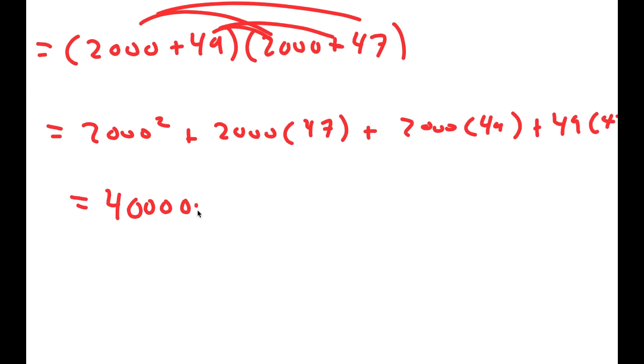And this is equal to 4,000,000 plus 94,000 plus 98,000 plus 49 times 47, which is equal to 2,303. And if I add all of these up, I get 4,194,303.